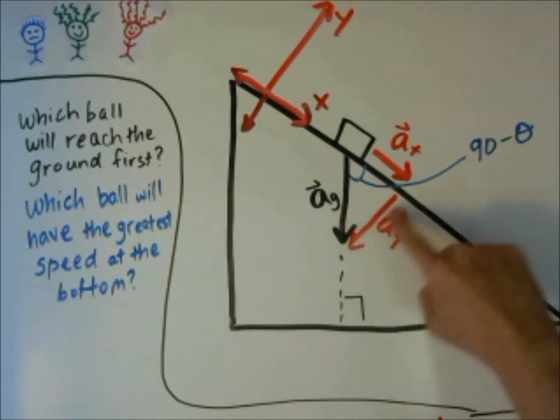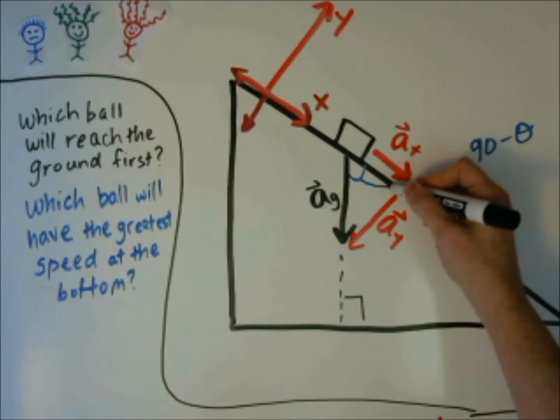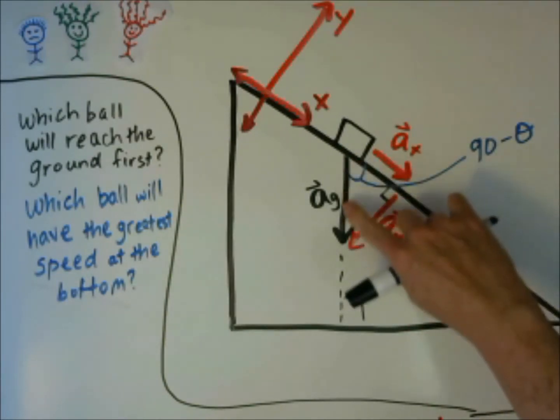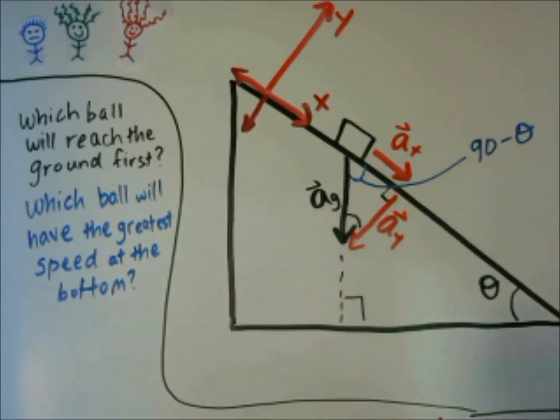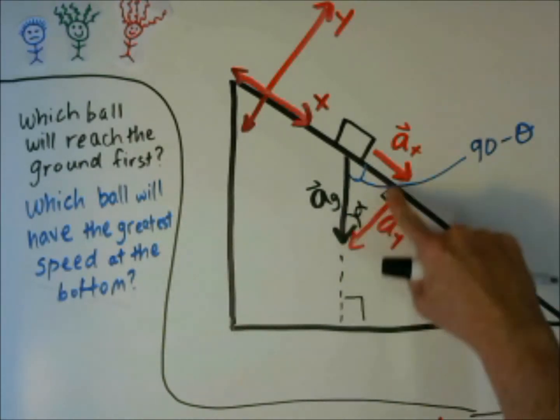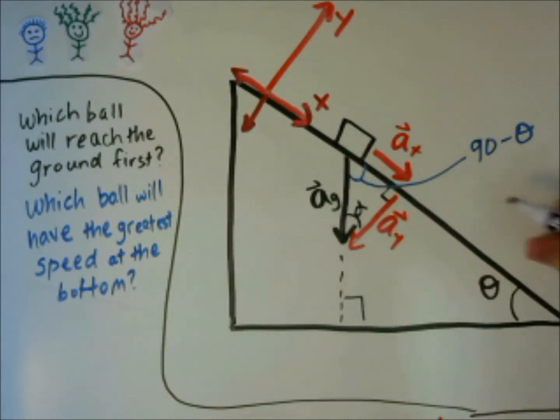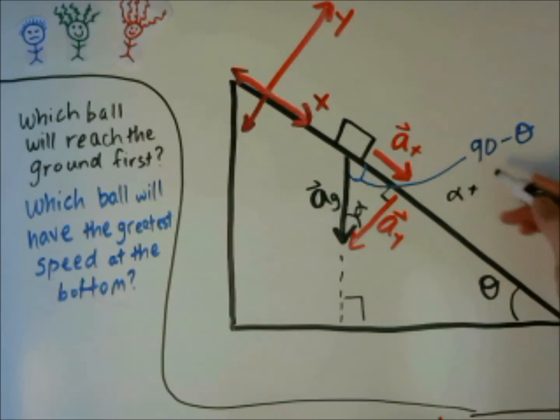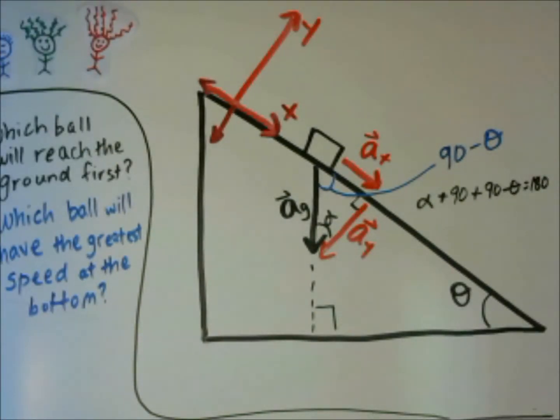Then we can look at this smaller triangle. This is also a right triangle. This is 90 degrees. This is 90 minus theta. So let's find this angle, we'll call it alpha. The total angles for this triangle are 180. That means alpha plus 90 degrees plus this angle, which is 90 minus theta, equals 180 degrees.